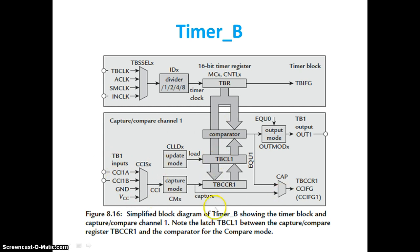Earlier we had a capture mode with TACCR X going to a comparator. In Timer B there is an additional block called the update mode. Here you write a value, and that value is going to be updated into the TBCL register. When it updates the TBCL value depends on the CCLDX register — that is the main difference.